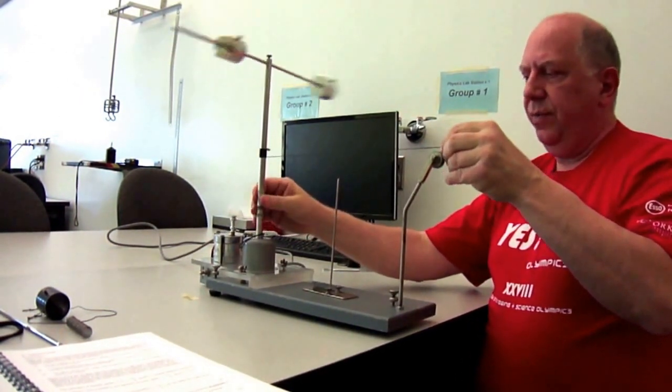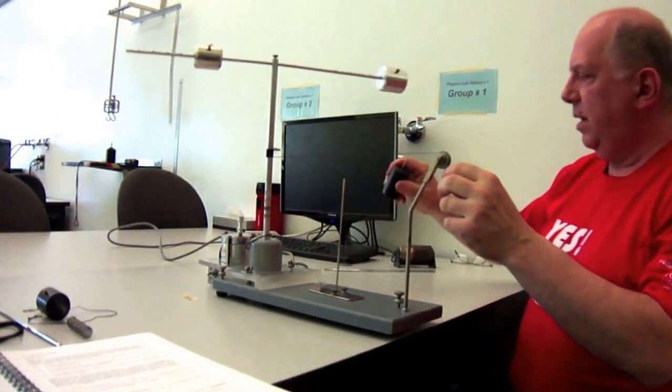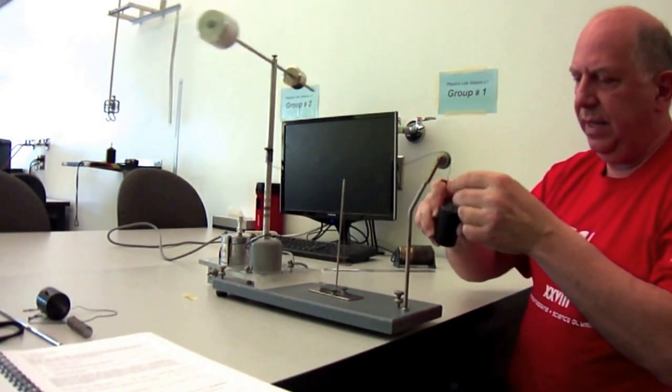And then we pass it over the pulley at this end and we take a 500 gram mass and attach it to the end of the string.